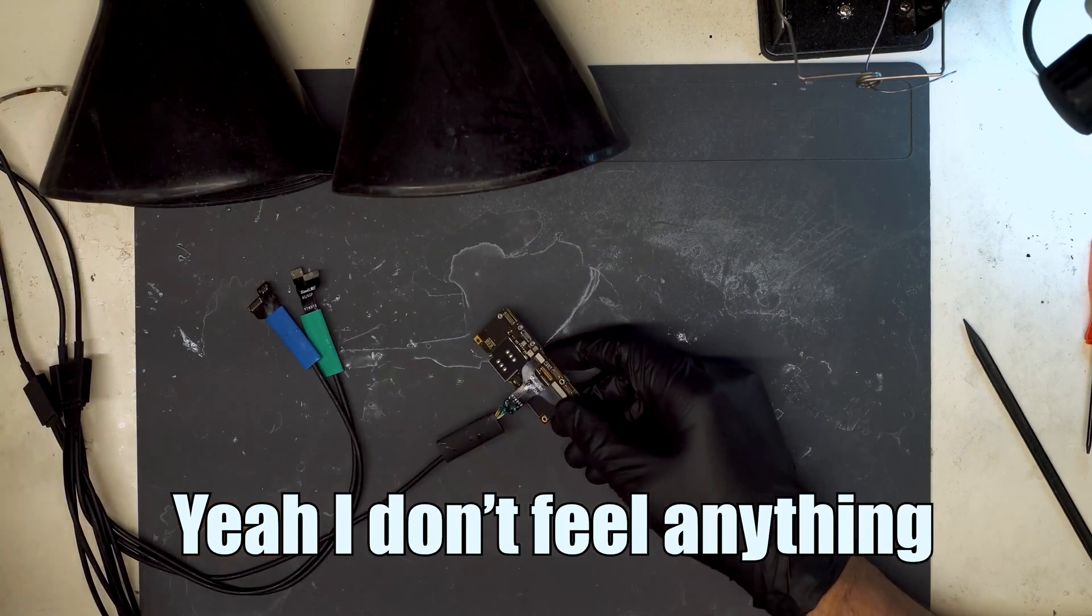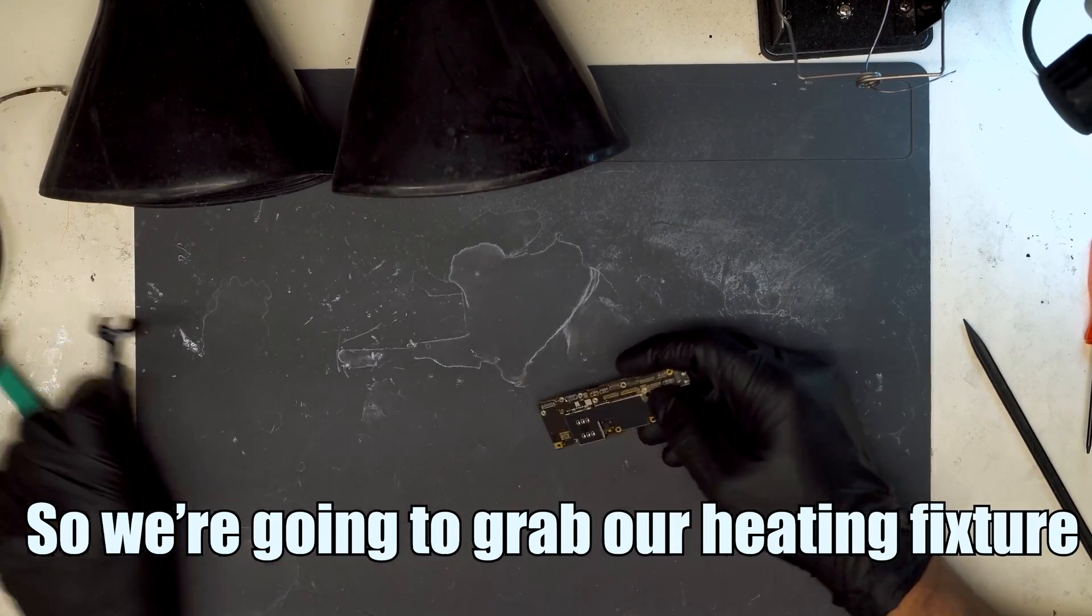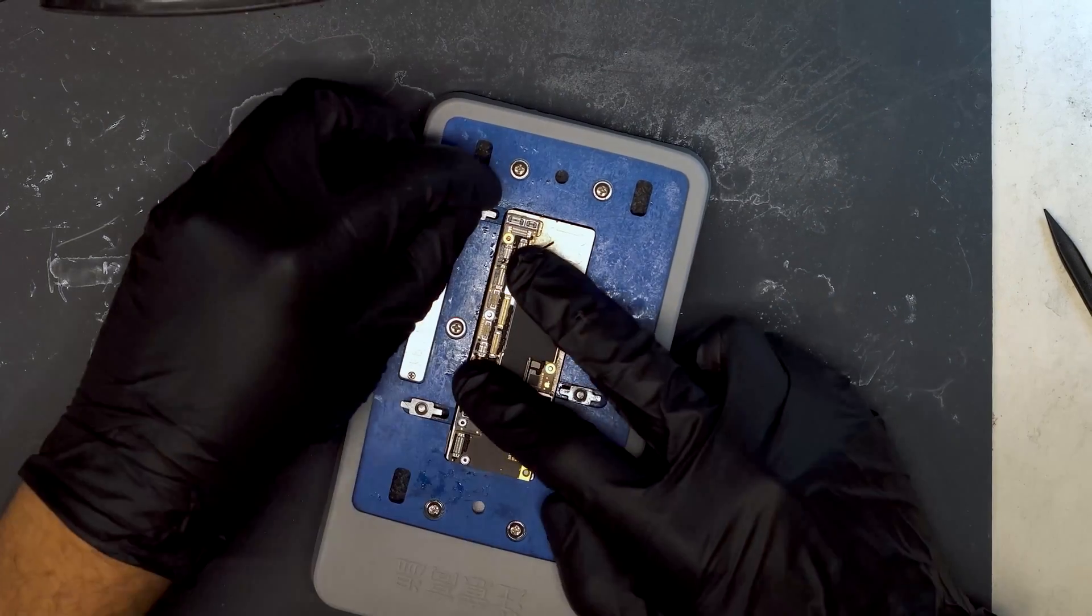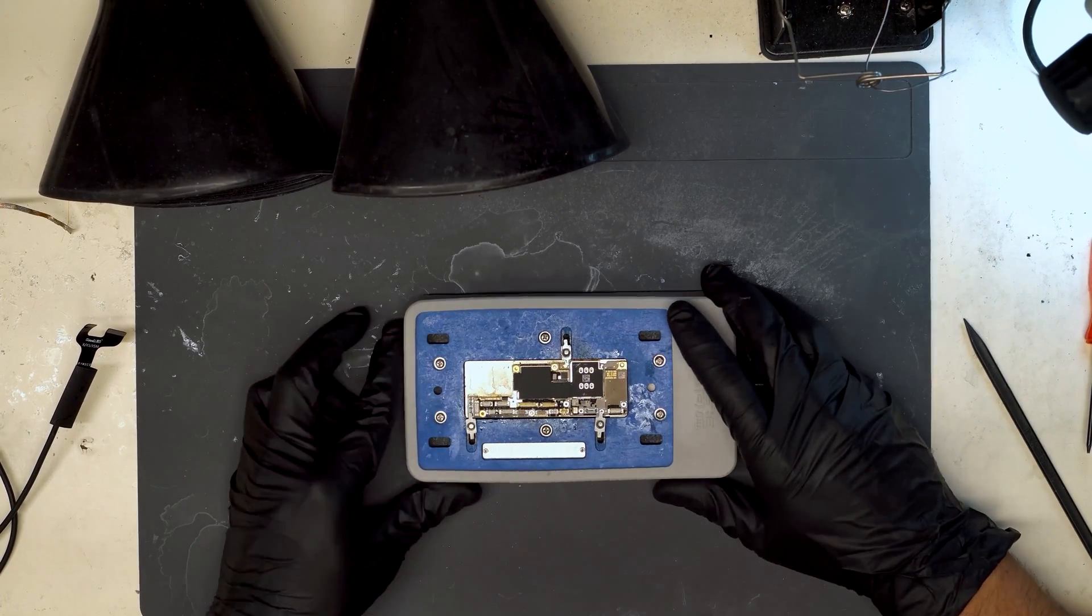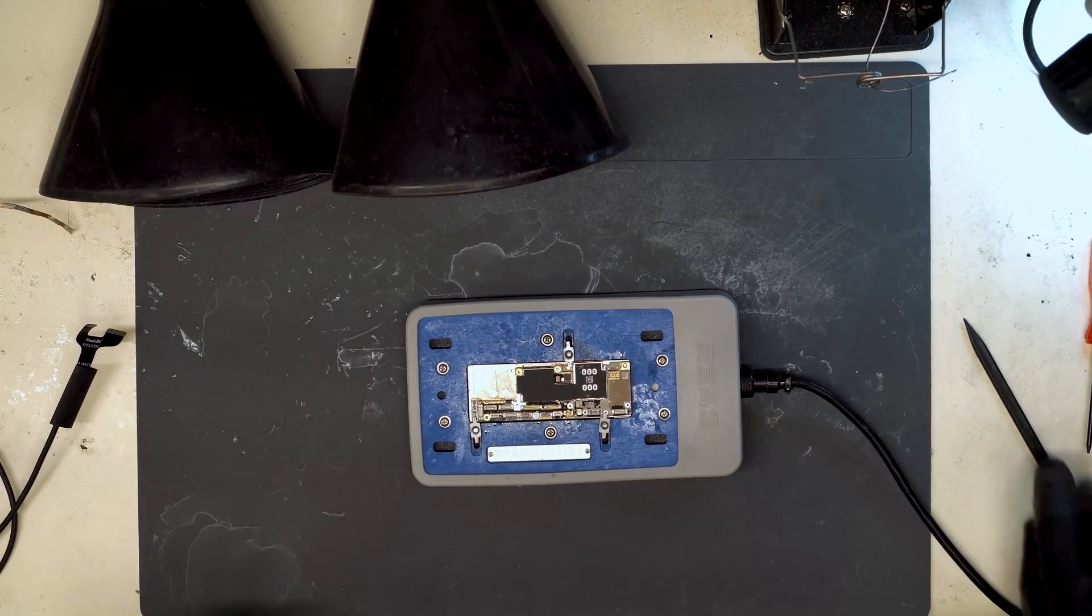So we're going to grab our heating fixture, put the board in and turn it on. Give it a couple minutes to heat up and we'll separate the top and bottom board.